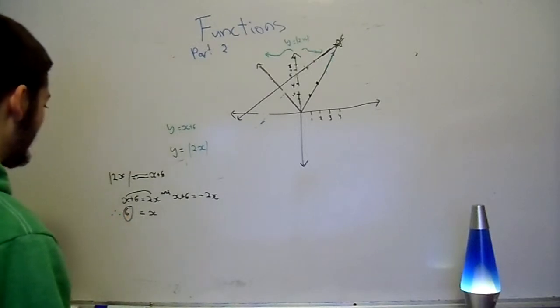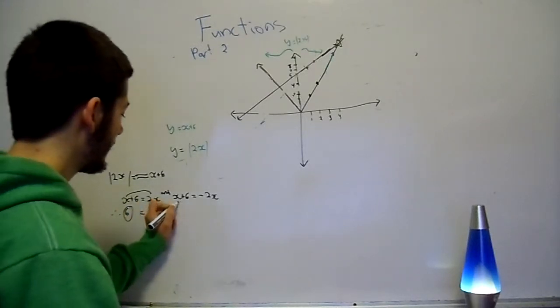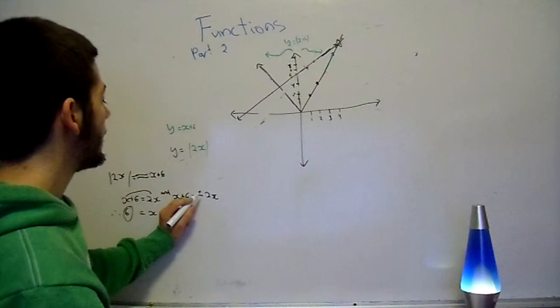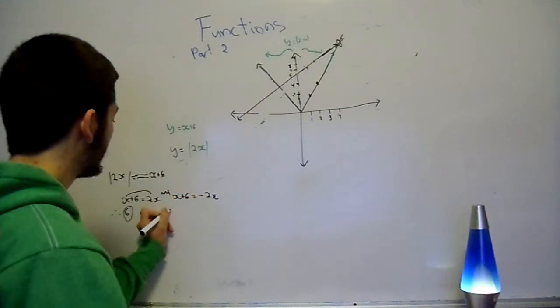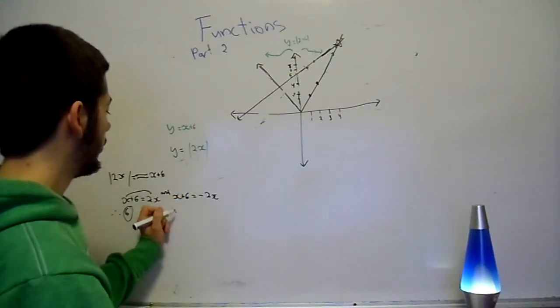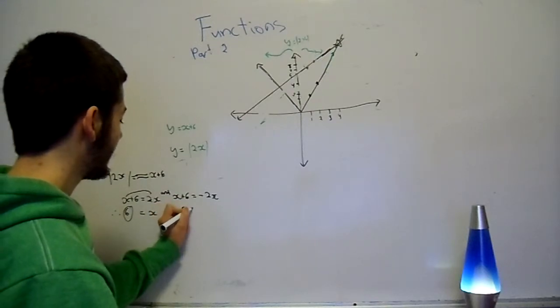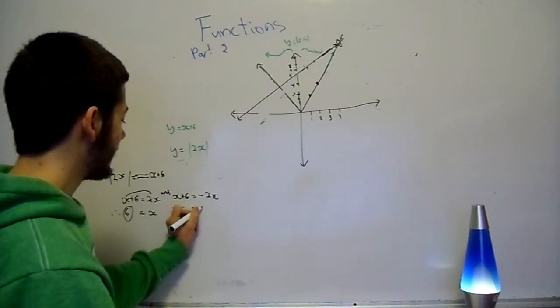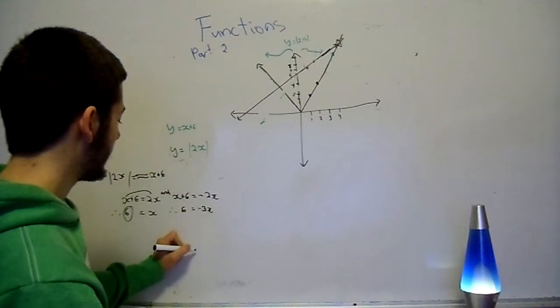Now on this, x plus 6 equals minus 2x. Therefore, when you move the x over, it's going to equal 6 is equal to minus 3x.